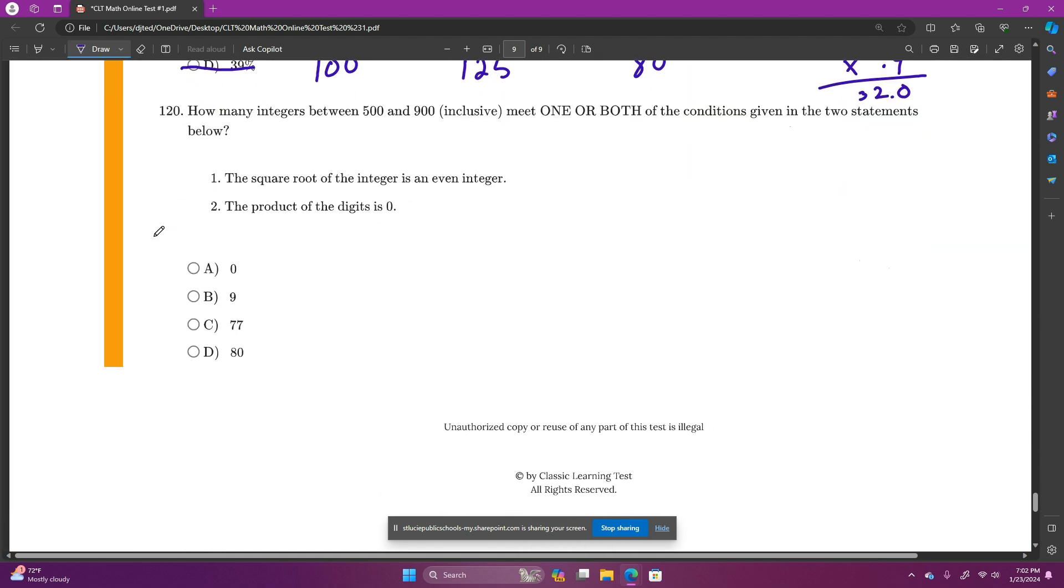And last question on practice test number one. How many integers between 500 and 900 inclusive meet one or both of the conditions given in the two statements below? The square root of the integer is an even integer and the product of their digits is zero. So how many numbers in the 500s, 600s, 700s, 800s up to 900 meet the criteria?